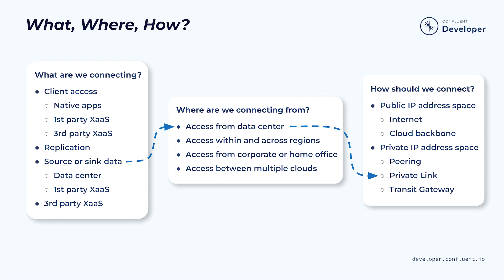Where do these services live? Are they running on-premise in a data center? Are they running in a cloud provider, in the same region, in a different region, or even in a different cloud provider? Do we have to access Confluent Cloud from a corporate or home office network? How are we connecting to Confluent Cloud? We'll summarize these options next.